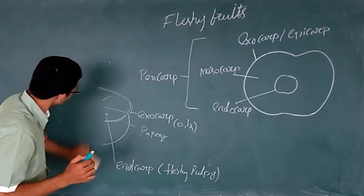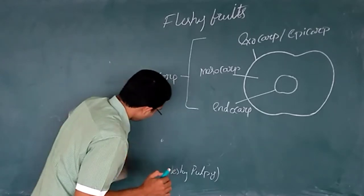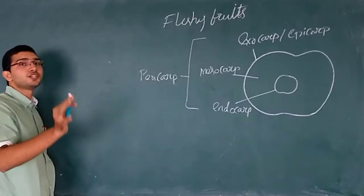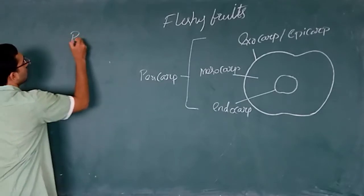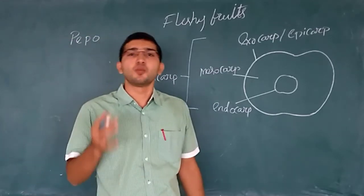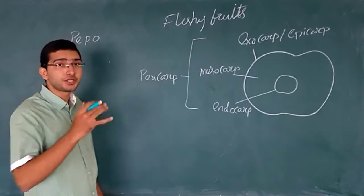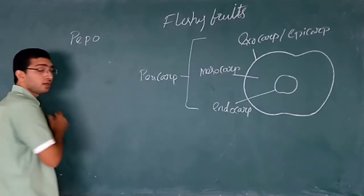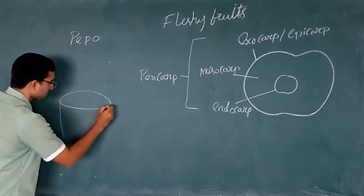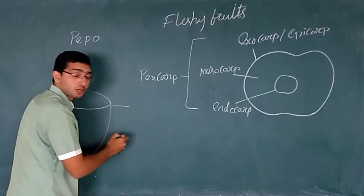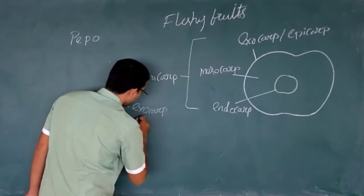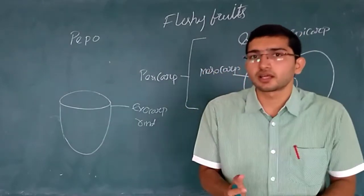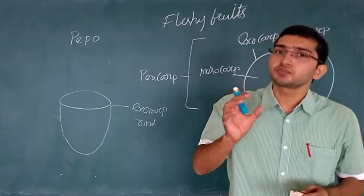Now let's discuss the pepo. Everything is based on the outer, middle, and inner layers, and on the basis of the nature of these layers the fleshy fruits are classified. The pepo includes cucumbers — most of the Cucurbitaceae family is included under pepo — in which the exocarp forms a hard, rind-like structure resistant to many harsh conditions.